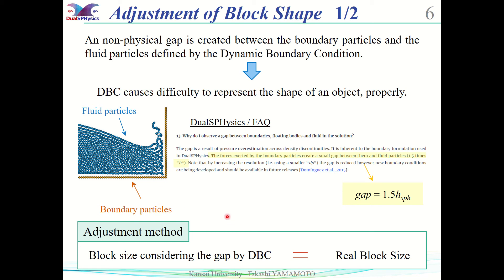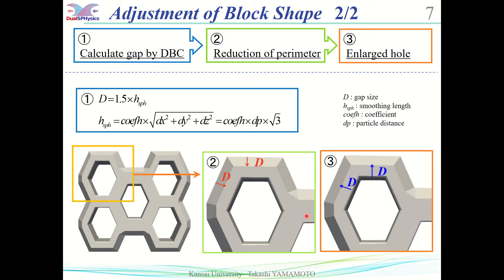Therefore, the size of blocks should be adjusted to account for the gaps, so that the size of blocks considering the gap and actual size of blocks are about the same. In the official website of DualSPHysics, it is mentioned that the size of the gap is 1.5 times of the smoothing length. The perimeter of the block is reduced by the gap, and the hole in the block is also enlarged.